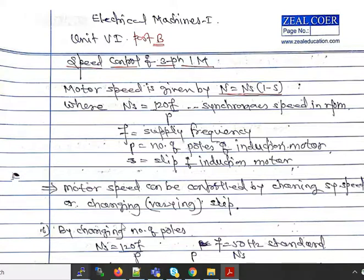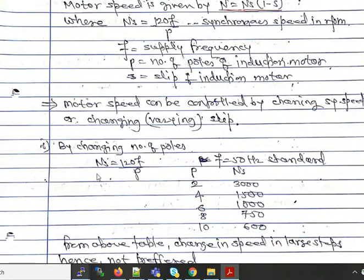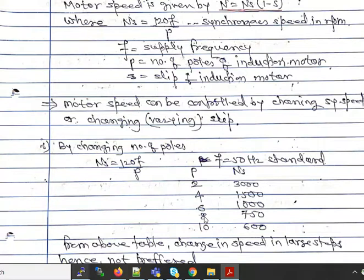Now let us consider speed control by changing the number of poles. Since ns = 120f / p, the speed is inversely proportional to the number of poles. At standard frequency 50 Hz, the number of poles are always even numbers. When p = 2, ns = 3000 rpm; p = 4 gives 1500; p = 6 gives 1000; p = 8 gives 750; and p = 10 gives 600 rpm.